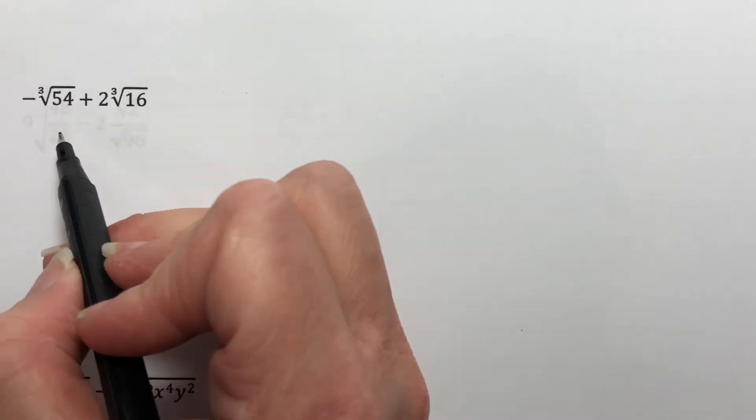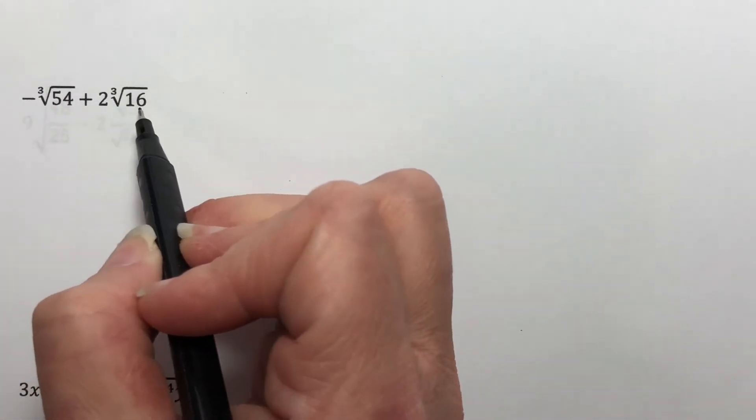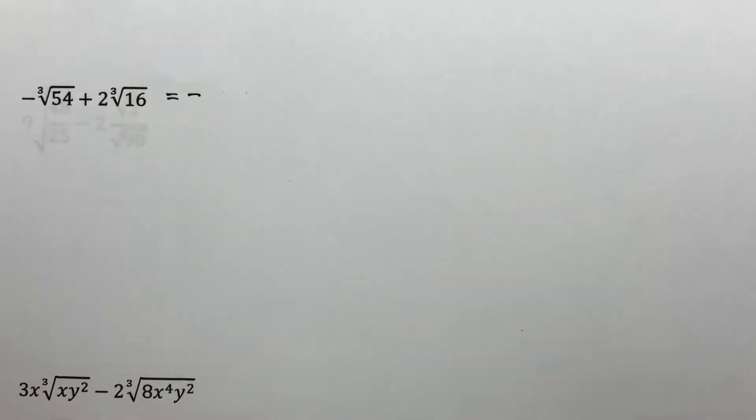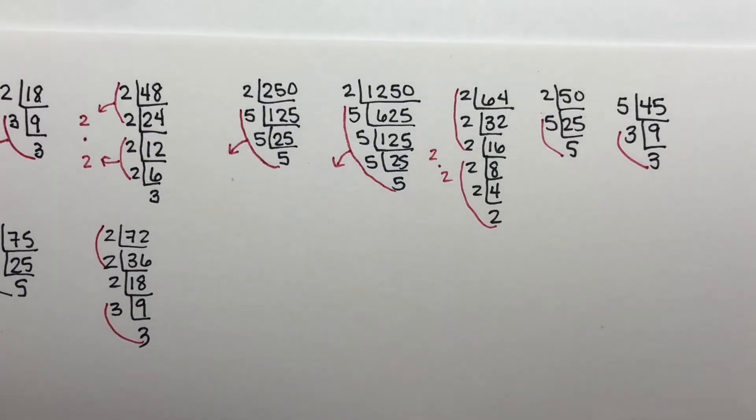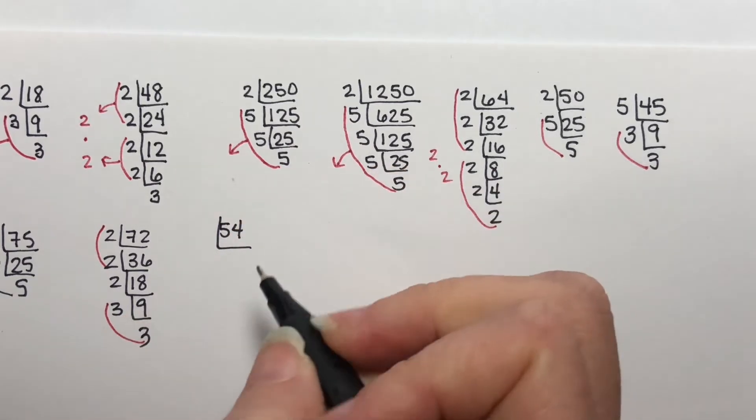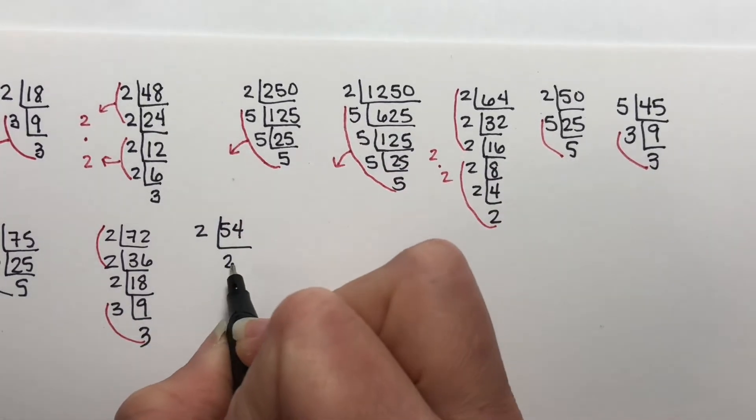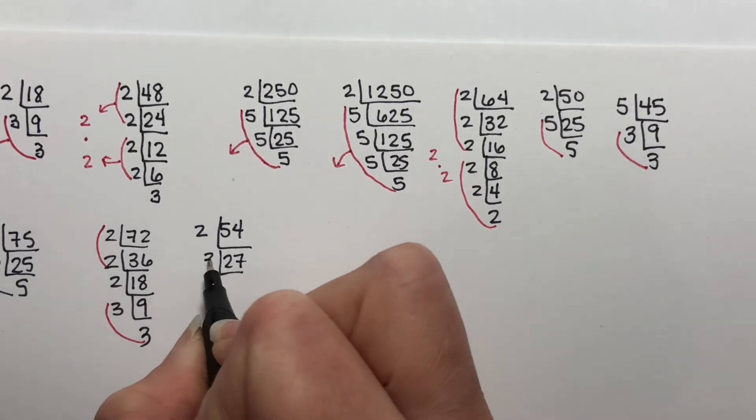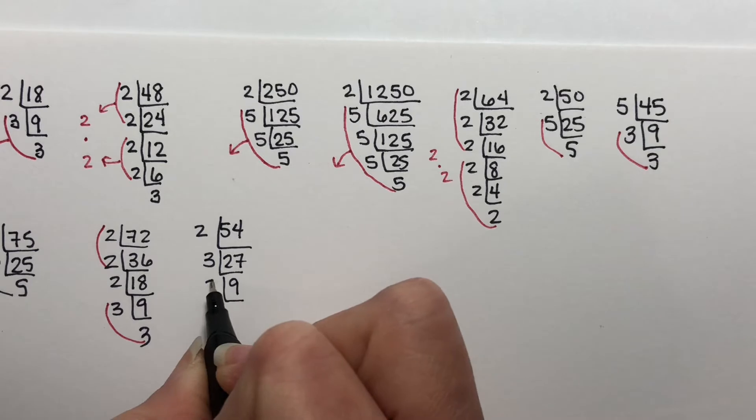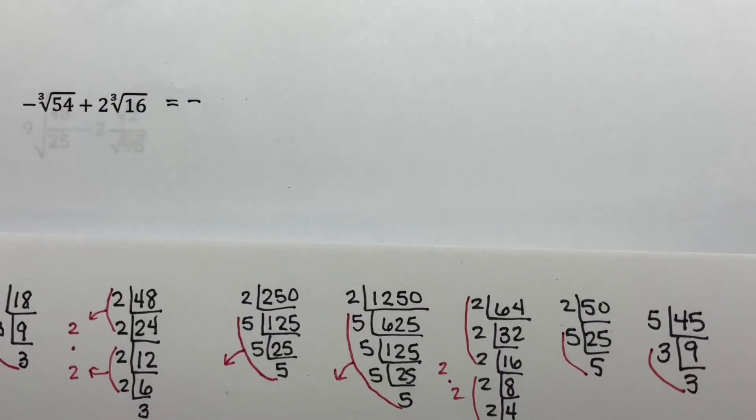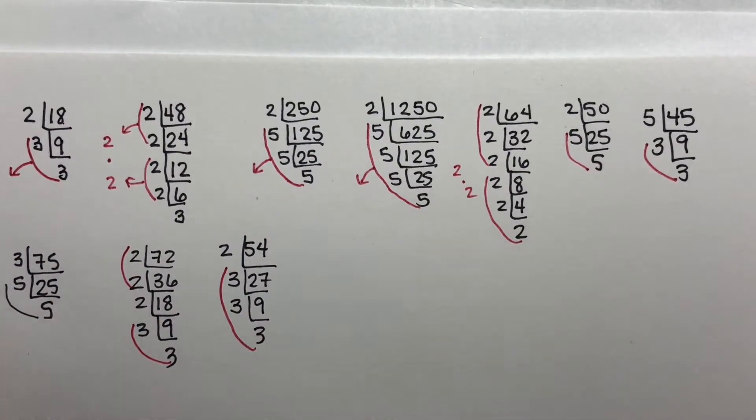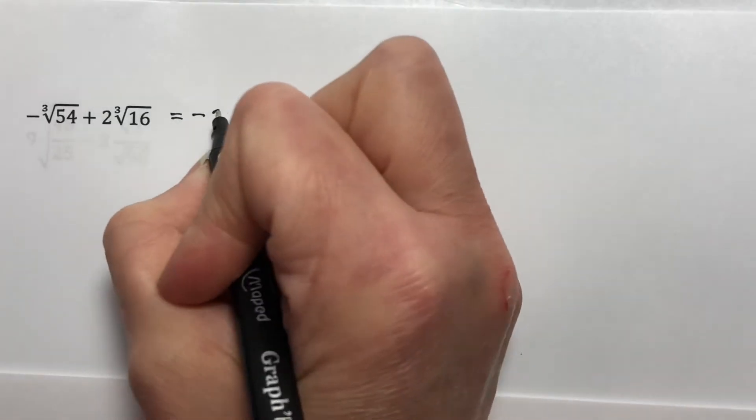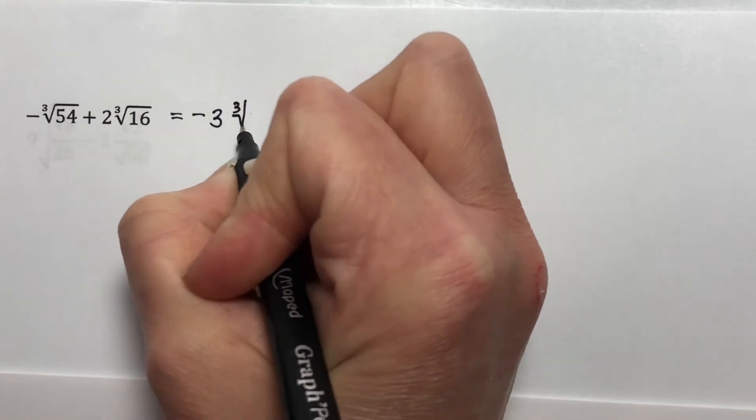So let's do this with minus the cube root of 54 plus two times the cube root of 16. So this is negative something. Do we have 54 anywhere? I don't believe so. So 54 is divisible by two, and that gives you 27. And then 27 is divisible by three, which gives you nine. It's divisible by three, and it gives you another three. Now we are looking for cube roots. So we're looking for three of a kind. So I have these three threes. So a three goes on the outside. A two is on the inside. So this is negative three times the cube root of two.